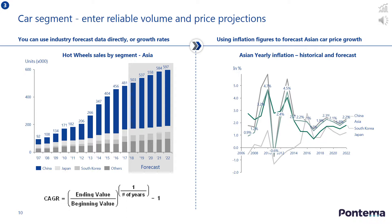Check with your team and peers to see if they have any reliable forecasts. For Hot Wheels, the chart on the left of the slide is showing industry forecast data sourced from an external analyst company. If this data is unavailable, you could build your own forecast using a compound annual growth rate. The formula is shown in the slide for reference, and if applied to measure Hot Wheels sales growth in Asia between 2012 and 2017, the growth rate would be 19%. For price projections, consult your marketing or finance colleagues for estimates. If no reliable data is available, you can use inflation data as a proxy for movements in car prices, as shown in the chart on the right of the slide.